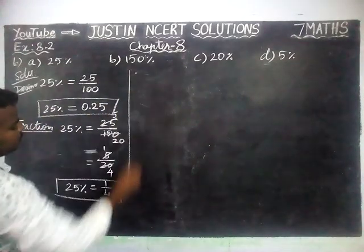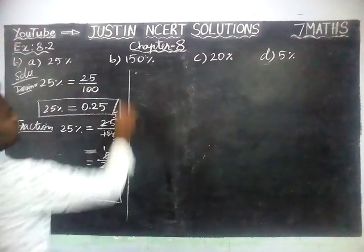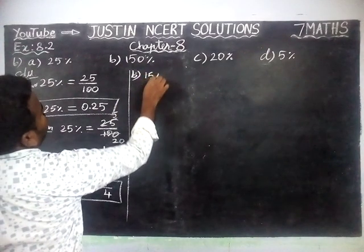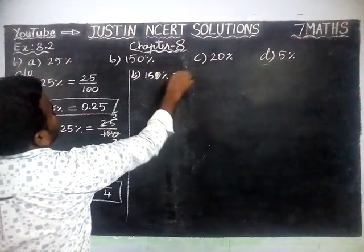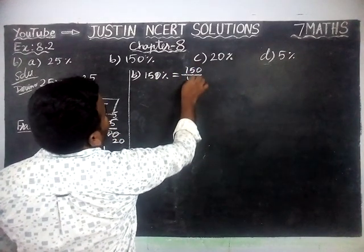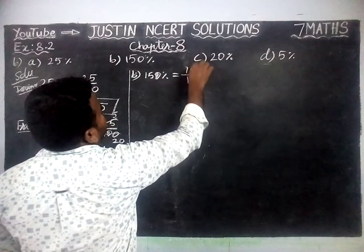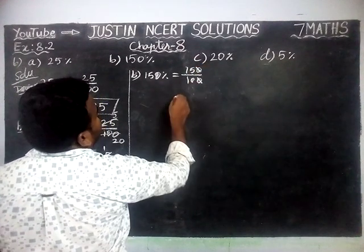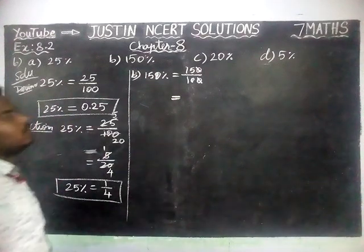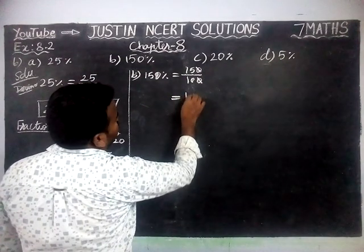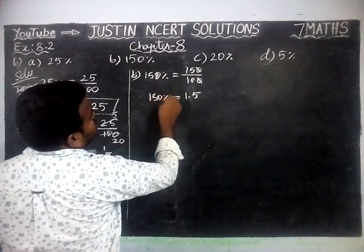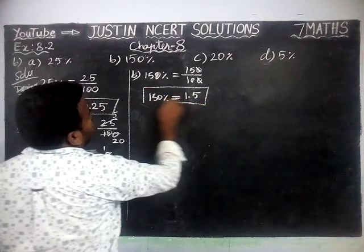Next we are going to solve part B: 150%. 150% is equal to 150 divided by 100. The zeros get cancelled and now we have only 1 zero remaining, so we have to make 1 decimal point, giving 1.5.